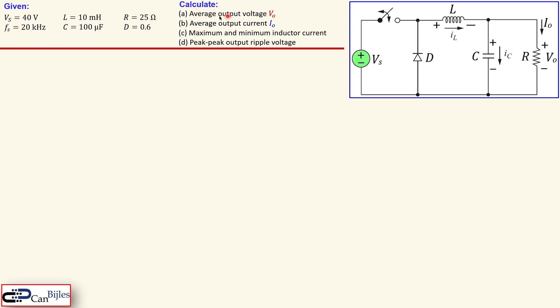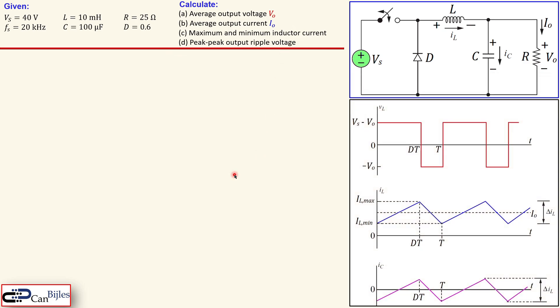The duty cycle is 0.6 in this case. Using these values we'd like to calculate these unknowns: the average output voltage, which is the DC output voltage, the average or DC output current, the maximum and the minimum inductor current, and the peak-to-peak output ripple voltage.